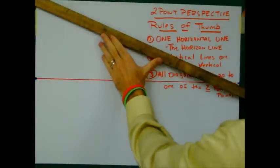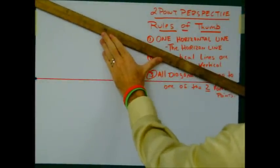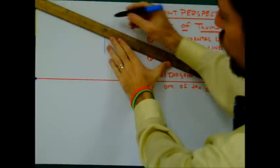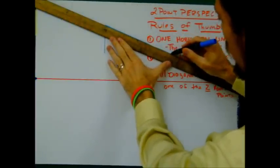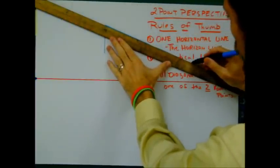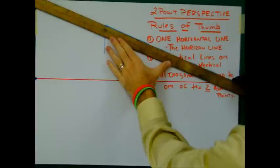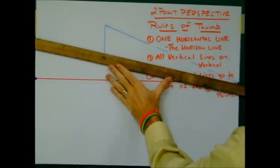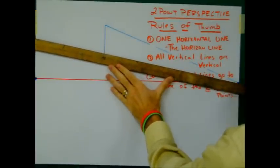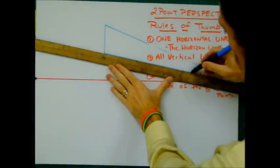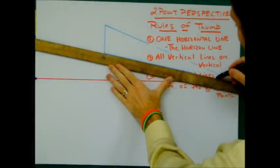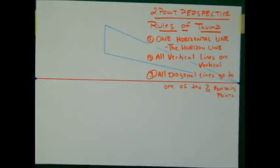From the top of that vertical line, we're going to go to our right vanishing point. I'm going to draw it all the way through, all the way through my text here. And then from the bottom, I'm going to draw it all the way to my vanishing point. So there's one side of my box.